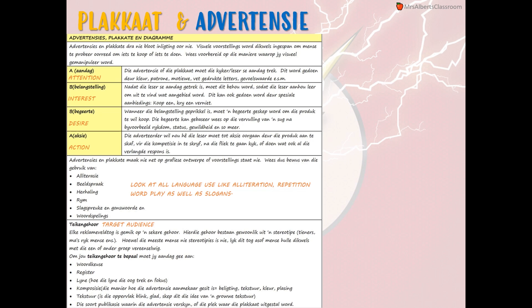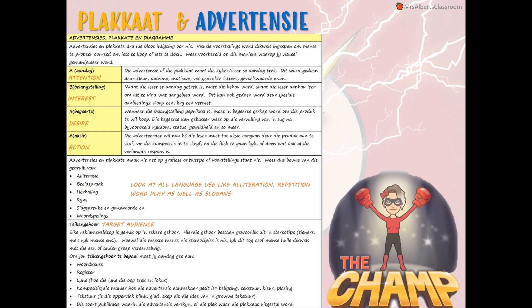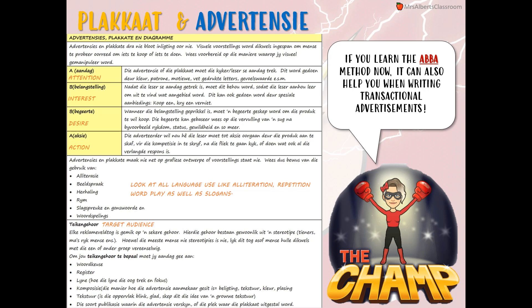Then in question three or four, you might get something like an advertisement or a poster. Both of them basically work the same way — they use the ABBA method. This ABBA method can also help you in writing your paper threes. ABBA stands for Aandag, Belangstelling, Begierte, en Aksie — so it needs to draw your attention, pique your interest, create a desire, and then lead you to action. Look at things like alliteration and repetition — they do love to play with words as well as slogans — and they will always ask you about the target audience.